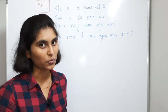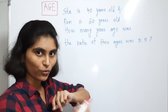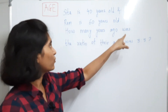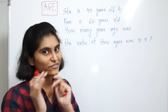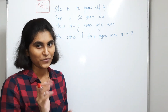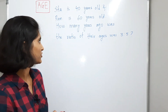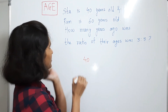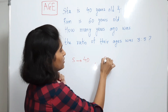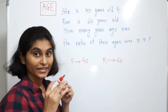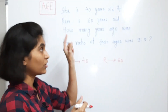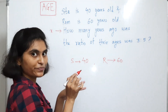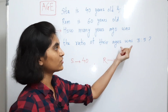Now let's look at a different type of problem. Sita is 40 years old and Ram is 60 years old. We are asked: how many years ago was the ratio of their ages 3 is to 5? What is your first reaction? It looks very tricky but it is not. Here we are asked 'how many years ago', which is unknown to us, so take this as x. The ratio of their ages was 3 is to 5.